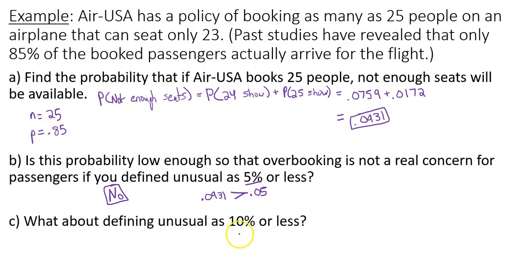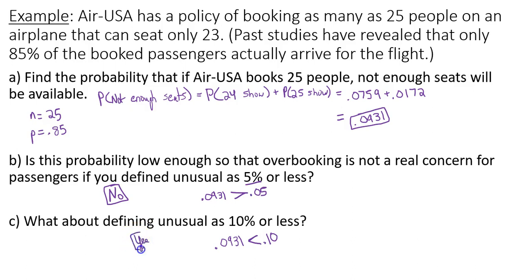In Part C, using a threshold of 10% or less, we compare 0.0931 to 0.10. Since 0.0931 is less than 0.10, in this case yes, it is low enough to not be a concern. So that's how you work this example. Thanks for watching.